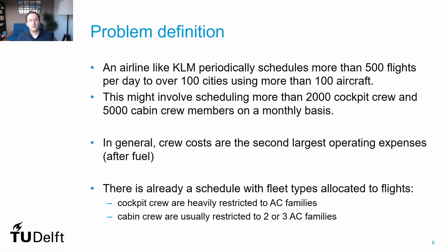The crew scaling problem is perhaps the, or one of the, most difficult problems to solve in the airline planning framework. If we talk about a company like KLM, we may have to address the problem of solving the monthly rosters of 2,000 cockpit crews and 5,000 cabin crew members, allocating them to more than 500 flights per day, involving 100 aircraft of four or five family types. Crews are usually associated with just one single aircraft family — that's the case for cockpit crew, or two to three family types for cabin crews.